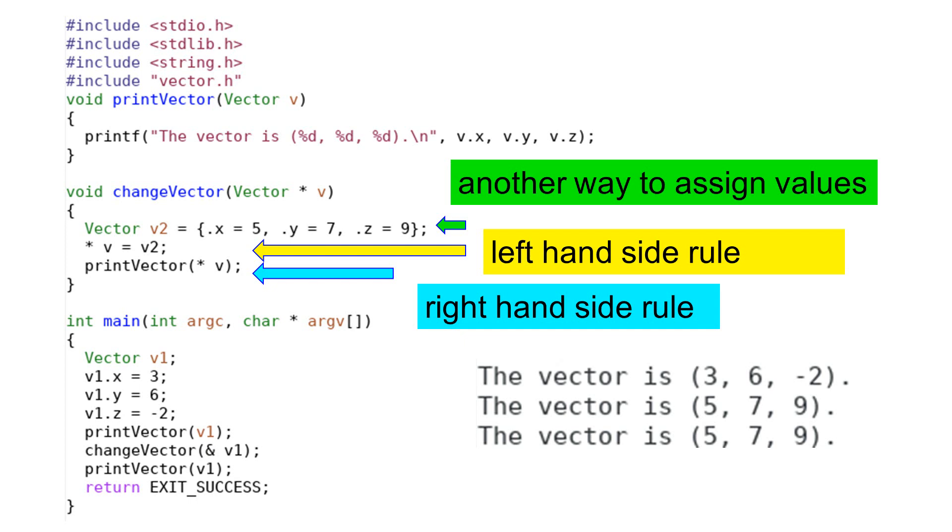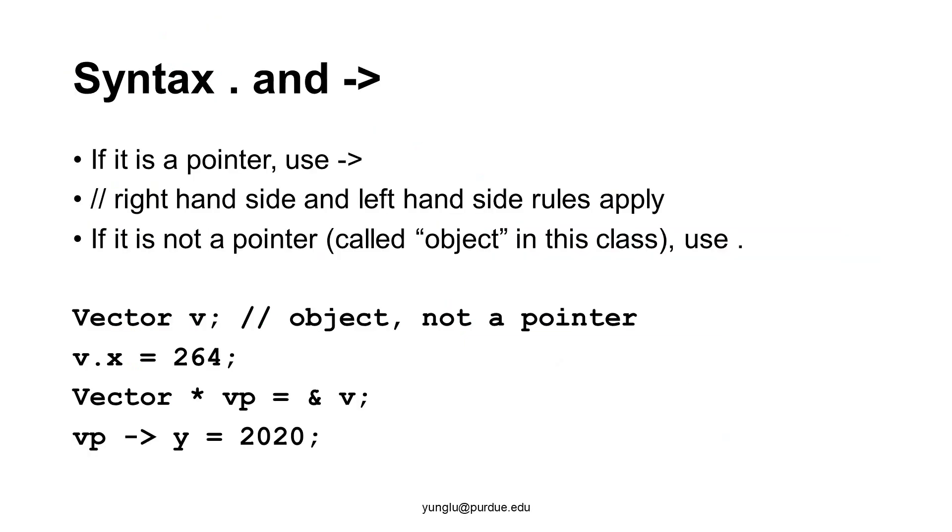When should we use dot and when should we use arrow? The rule is simple. If it is a pointer, use arrow. If it is not a pointer, use dot. Consider this example. An object v is created. Since it is not a pointer, we use v dot x. A pointer called vp is created and its value is the address of v. Because vp is a pointer, we need to use arrow.